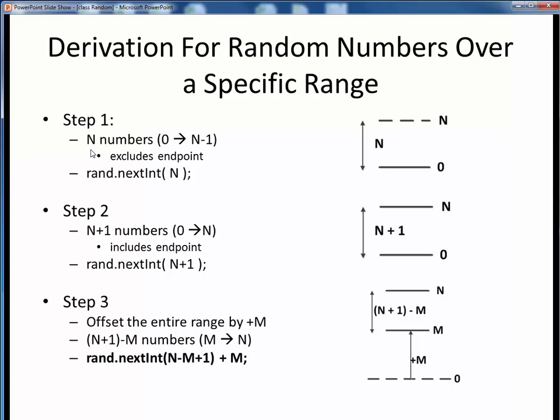This gives us N possible random values, and the code expression we'd need is given here. Note that we are assuming that our random number generator random object has been created and is called rand. So for example, if N is equal to 100, this will give us 100 possible random numbers from zero to 99.